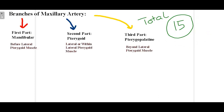Talking about the branches of the maxillary artery, the maxillary artery is divided into three parts by the lateral pterygoid muscle: the first part, which is the mandibular part; the second part, known as the pterygoid part; and the third part, known as the pterygopalatine part. In total, the maxillary artery has 15 branches across these three parts.